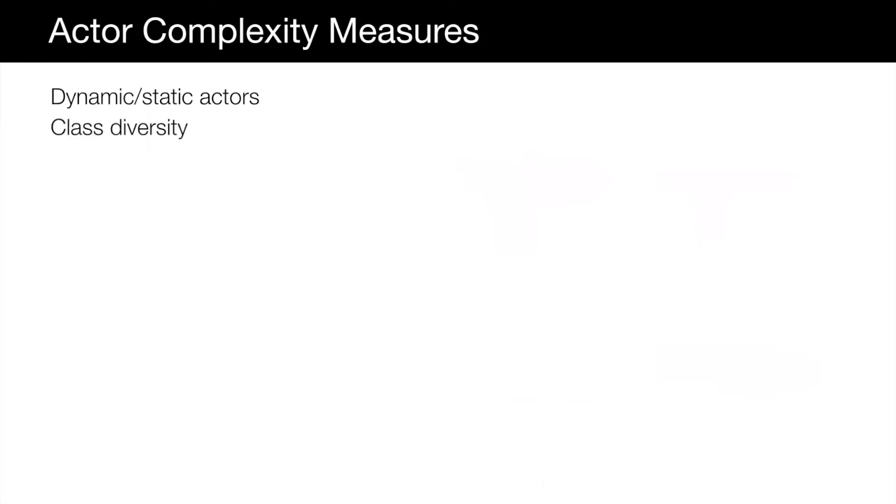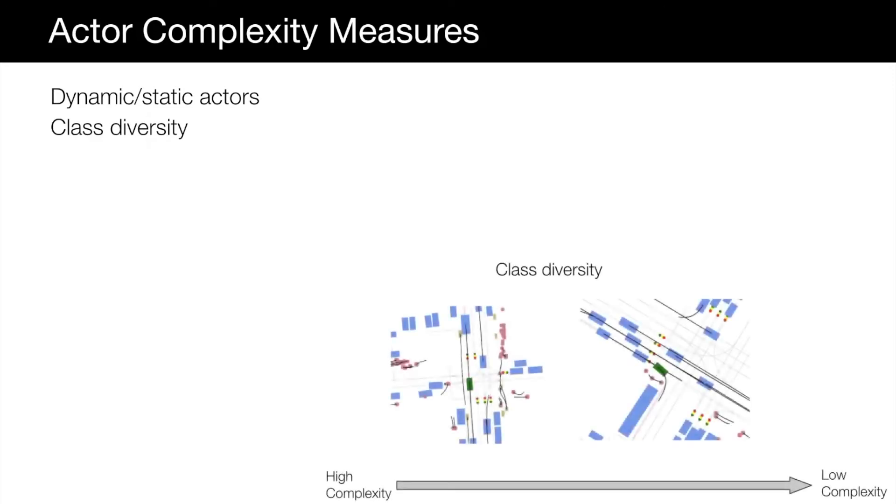Similarly, we measure how diverse the scenario is with respect to actor types. Here are examples of scenes with high and low actor class diversity, where on the left many instances of vehicles, pedestrians, and bicyclists are present in contrast to the scene on the right.